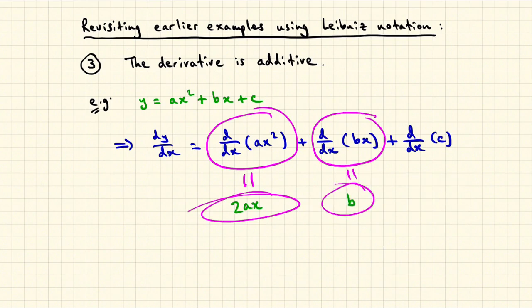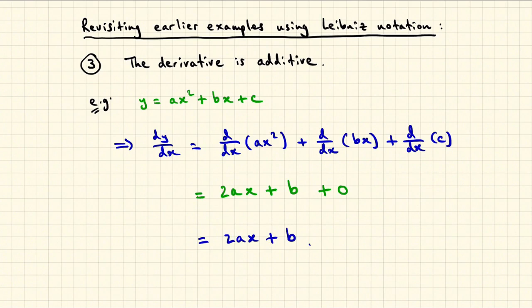The derivative of bx can be written as d dx of bx, which is b, and the derivative of the constant function c can be rewritten as d dx of c, which is 0. And the entire derivative simplifies to 2ax plus b.